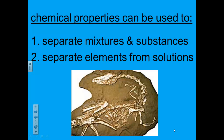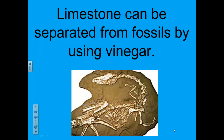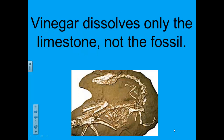Scientists who study dinosaur fossils and other fossils use chemical properties to separate mixtures. Fossils are often scattered throughout limestone. It can be difficult to chip limestone off a fossil without damaging the fossil. However, limestone can be separated from fossils by using vinegar.